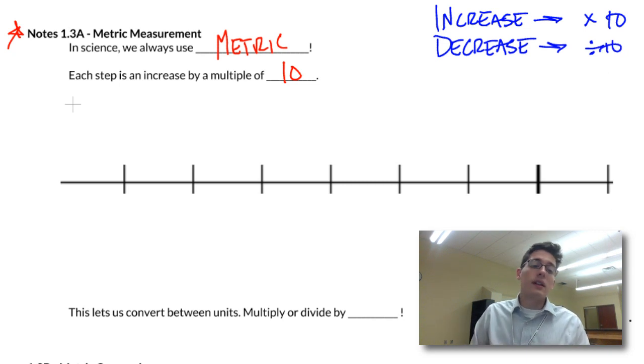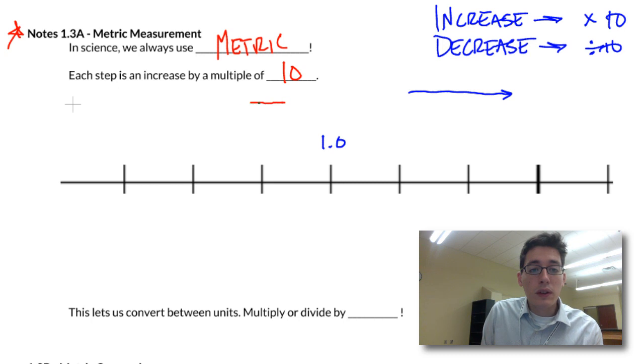So we're going to fill in this number line today, and then we're going to stop there because I want you to just be able to think in terms of metric, and there's going to be a lab we do with this in class. But let's start at 1, and we're going to use a decimal point in this. So this is going to be our base right here, and I'll give you units later, but let's just look at the numbers. If I want to increase my numbers, we're going to be moving to the right, and then we're also going to be moving to the left.